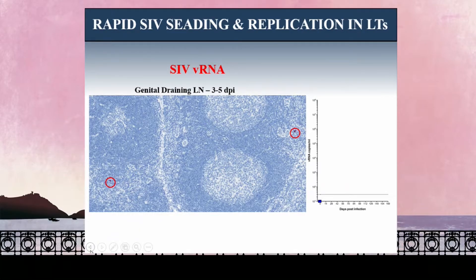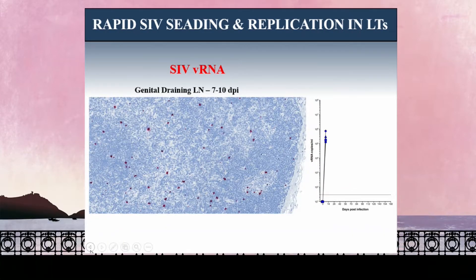After an animal or human is infected, within about three to five days we're able to see productively infected cells within the draining lymph node of the mucosa — in this case a genital draining lymph node because these animals were vaginally challenged. We can see these very rare but identifiable productively infected cells by in situ hybridization within the pericortical T cell zone and the trabecular sinus, suggesting immigration into the lymph node. This is at a time point when the animal is completely aviremic — we cannot find virus within the plasma.